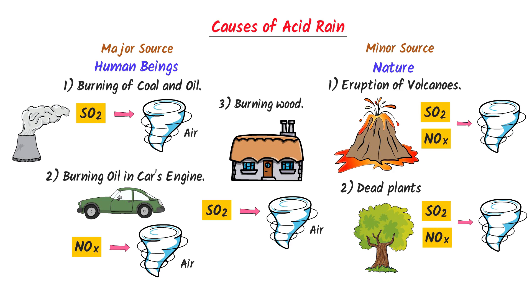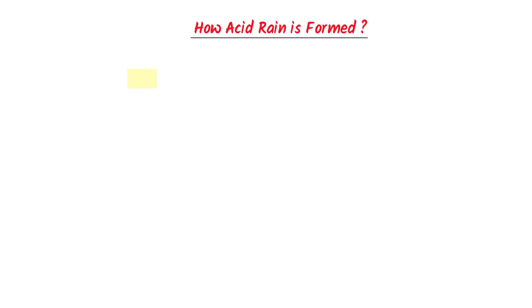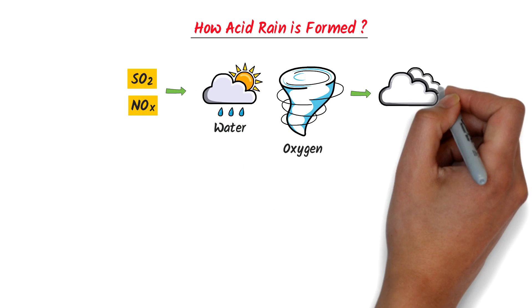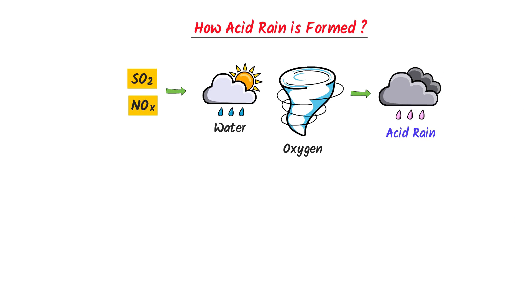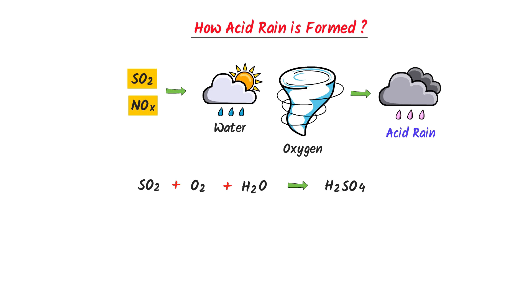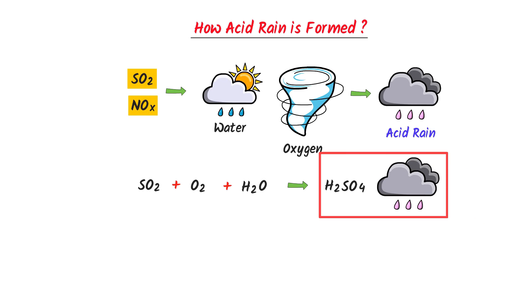Anything that produces sulfur dioxide and oxides of nitrogen is considered to be the main cause of acid rain. Now, let's learn how acid rain is formed. When sulfur dioxide and oxides of nitrogen react with rainwater and atmospheric oxygen, acid rain is formed. For example, when sulfur dioxide reacts with atmospheric oxygen and rainwater, it forms sulfuric acid, H2SO4. This sulfuric acid is present in the rain, so this rainfall contains acid like H2SO4 — that's why we call it acid rain.